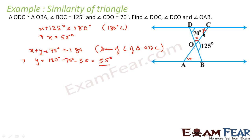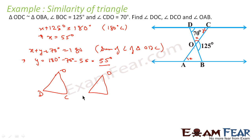So Y is also 55 degrees. We now have X, Y, and D. Since triangle ODC is similar to triangle OBA, drawing them in the same orientation: angle D is 70 degrees, angle C (which is Y) is 55 degrees, and angle O (which is X) is 55 degrees. Since these triangles are similar, the corresponding angles of triangle OBA are also 55, 70, and 55 degrees.